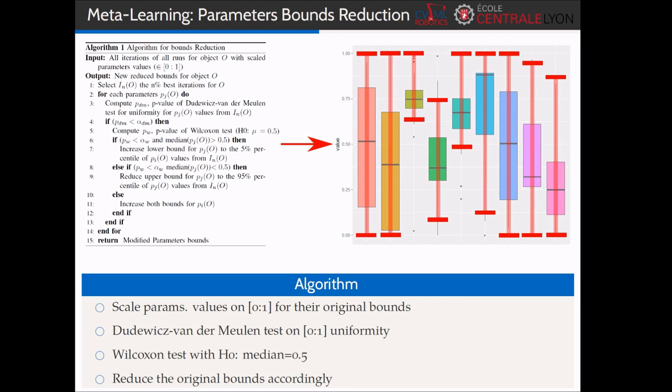For all the parameters' distribution of the best iterations for a specific object, we use an algorithm to check the uniformity with a Kolmogorov-Smirnov test, coupled with a Wilcoxon test for the median at 0.5, in order to know if we should reduce the upper boundary, like parameters 8 and 9 in this example, increase the lower one, parameters 3, 5 and 6, or both, parameter 4.